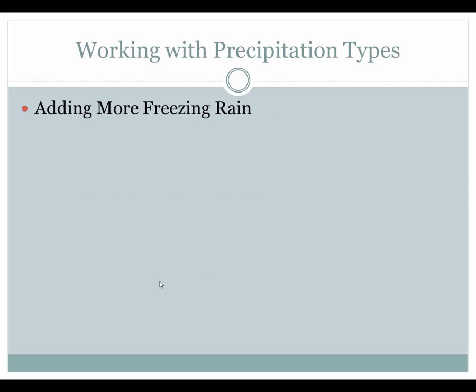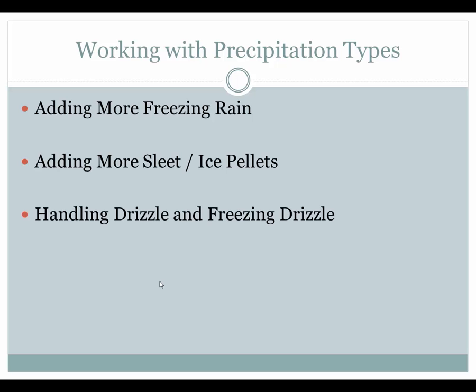In this module, we'll touch on a few different things that you'll use operationally with the probability of weather type: adding more freezing rain to the forecast grids, adding more sleet or ice pellets — and both of these can be done in the inverse process to reduce freezing rain and ice pellets. Also, how drizzle and freezing drizzle is handled in the grids and in the forecast, and finally some discussion of the probability of ice present grid and when and when not to use that grid.